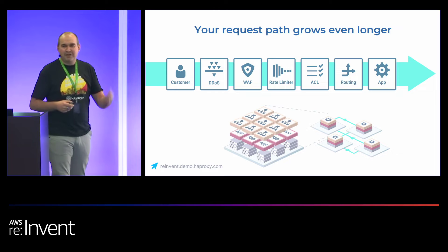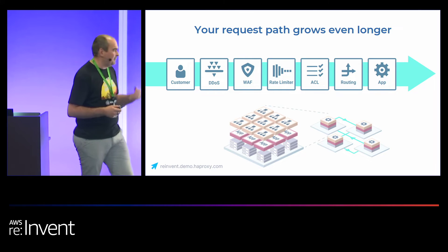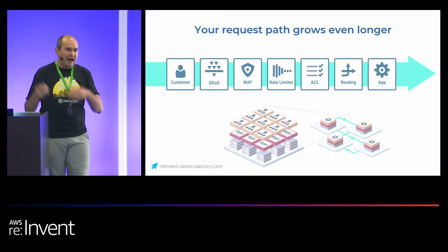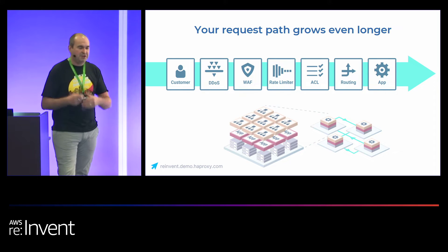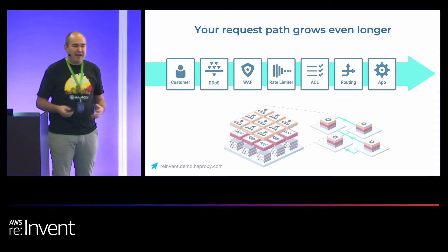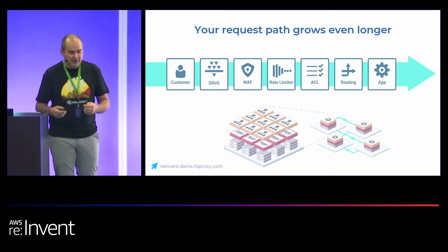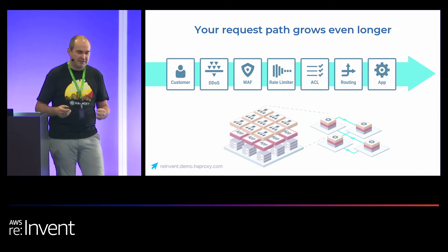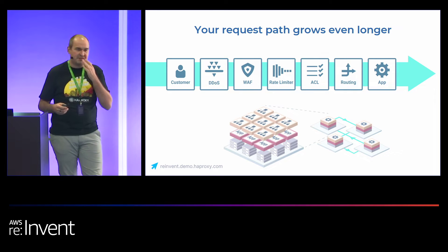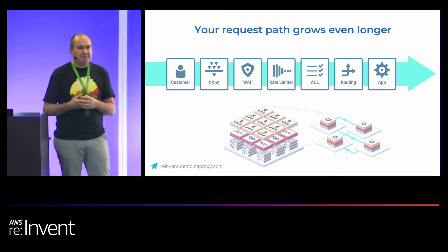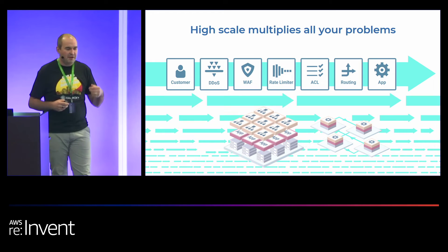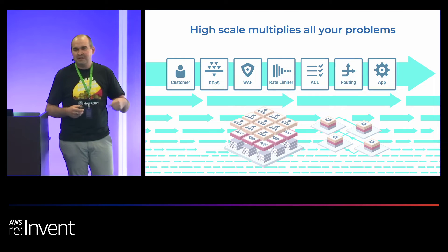Your request path grows even longer as you go through all of these layers. A customer requests your API or website, and you need to get traffic into your clusters using IP anycast or Route 53 DNS load balancing. Then you do DDoS protection, put a WAF in front of everything, do rate limiting, then access control lists like IP ACLs, and then route the traffic — whether to containers, clusters, EC2 instances, or as an API gateway based on specific rules. High scale multiplies these problems across millions of requests.